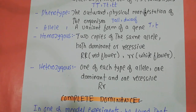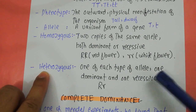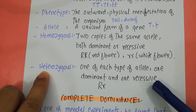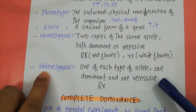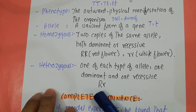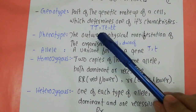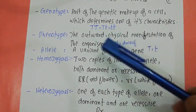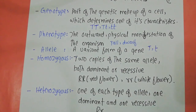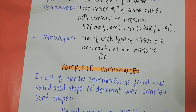In the heterozygous condition, one of each type of allele — one dominant and one recessive — is present. That particular condition is known as the heterozygous condition. For example, capital R and small r, or for the height of the plant, capital T and small t, because both alleles in this pair are different from each other. This is known as the heterozygous condition — 'hetero' meaning different from each other.